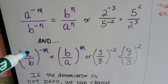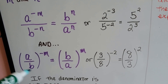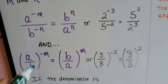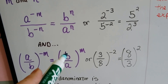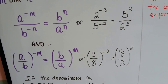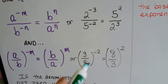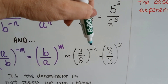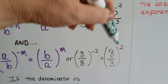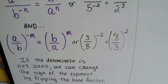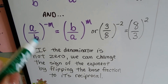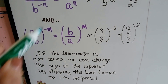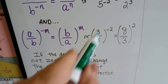And if we've got them inside parentheses, then that means the whole thing is the base. And if it's to negative m, we can flip the whole thing around with the b as the numerator and the a as the denominator and make it positive. So if we had 3 eighths in parentheses to a negative 2 exponent, we could flip it around to its reciprocal — 8 over 3 — and make that a positive. If the denominator is not zero, or the numerator, we can change the sign of the exponent by flipping the base fraction to its reciprocal.